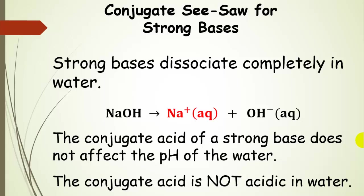The same applies to strong bases. A strong base is as strong a base as you can have in water, so its conjugate acid is as weak as possible. The conjugate acid — sodium cation — does not affect the pH of water at all. That conjugate acid is not acidic in water. So when you add sodium chloride to your cooking water, it doesn't change the pH — neither chloride nor sodium ions react with the water.